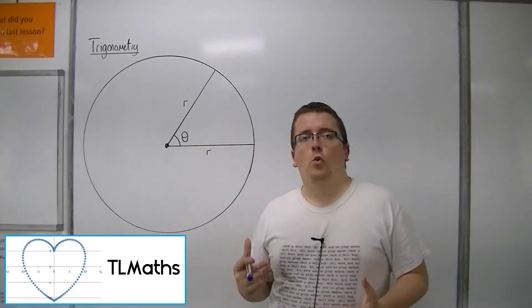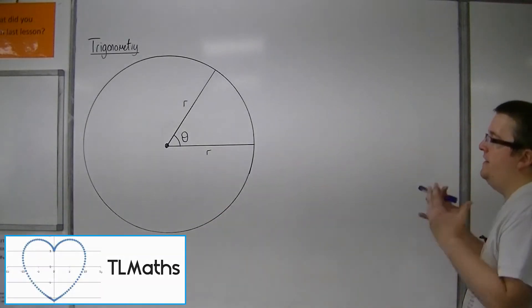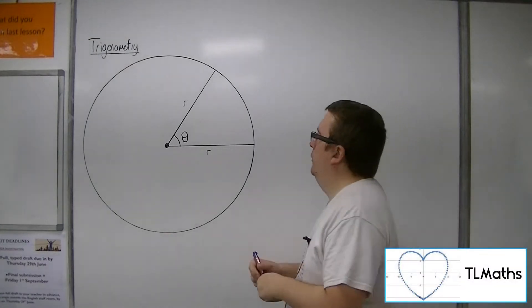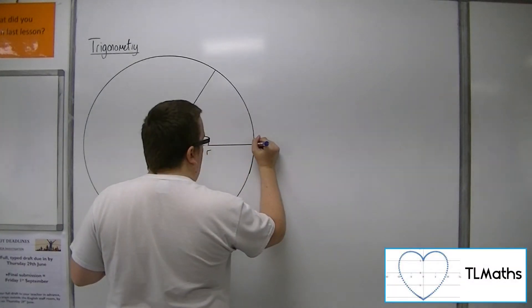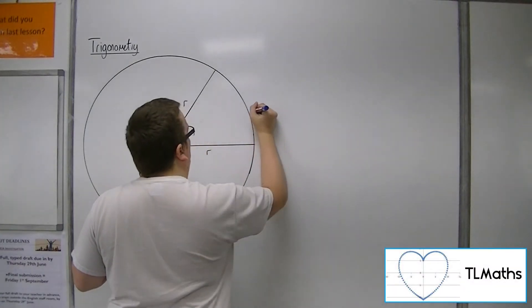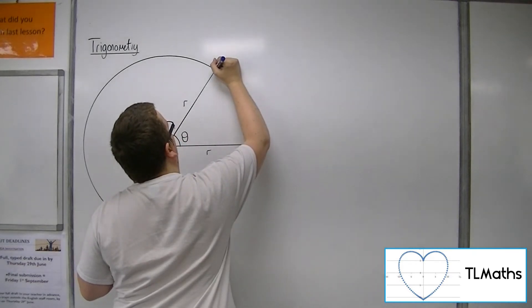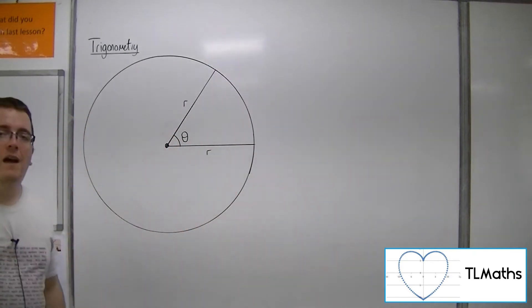So from GCSE, if you wanted to work out the length of an arc, so that would be this length here. So that point all the way around the circle to that point, that is my arc.